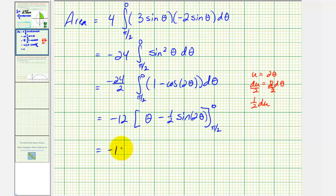So we would have negative 12 times, we first substitute zero for theta. That'd be zero minus one-half sine zero, that's zero minus zero. And then when theta is pi over two, we would have pi over two,